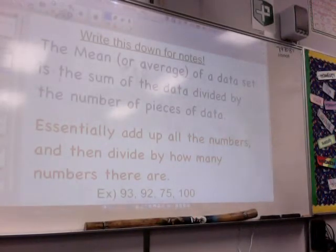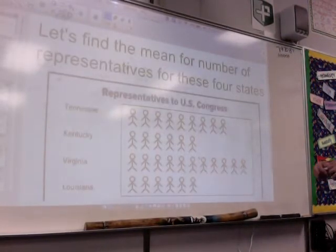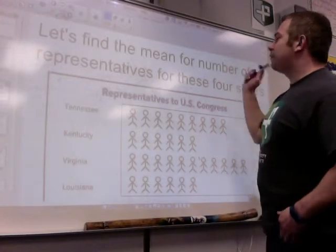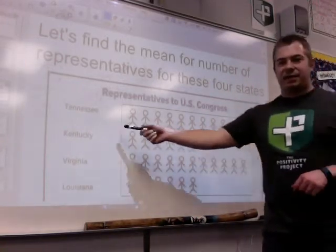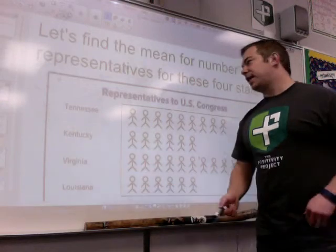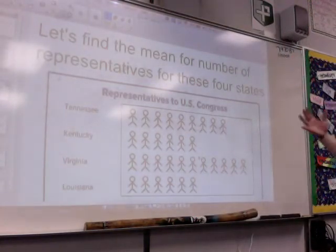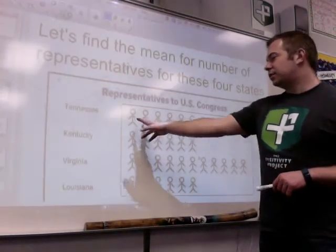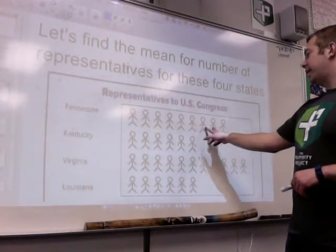So I hope you took those notes down. Now let's find the mean for the number of representatives for these four states. So we have Tennessee, Kentucky, Virginia, and Louisiana. They have a certain amount of representatives. Tennessee has 2, 4, 6, 8, 9.